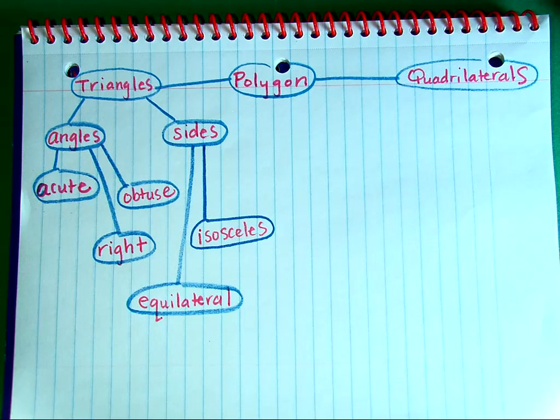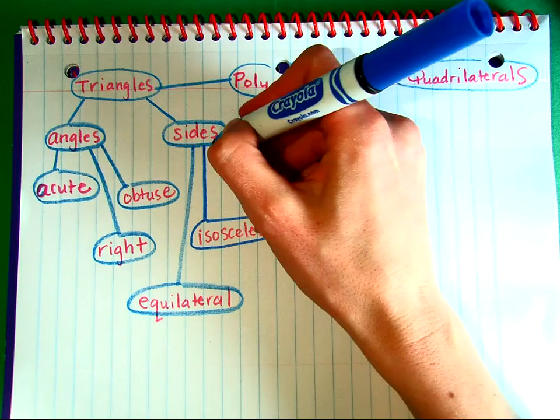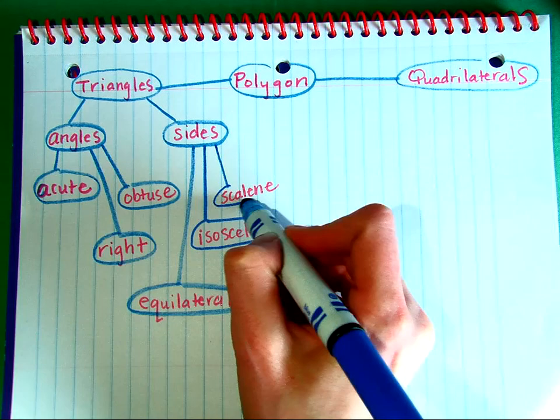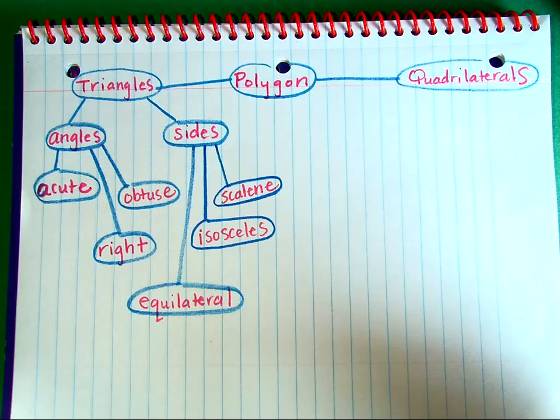And the last way we classify triangles according to their sides: if we measure the three sides of the triangle and none of them have the same length, then we call that a scalene triangle. So this is a hierarchy of triangles.